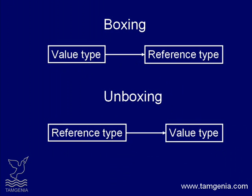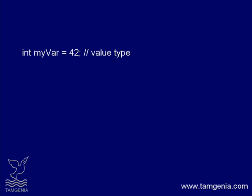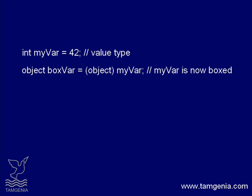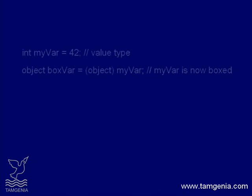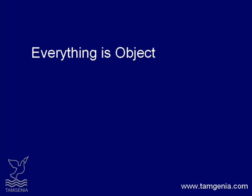Take a look at this code snippet. In the first line, the int type variable myvar is assigned the value 42. We already know that int, or integer, is a built-in value type. In the second line, we are boxing the variable myvar — it is being copied to an instance of the object reference type, represented by the variable boxvar. It is possible to cast any type to object type, because all types, including value types, derive from the type object. This is an important aspect of C#'s unified type system.